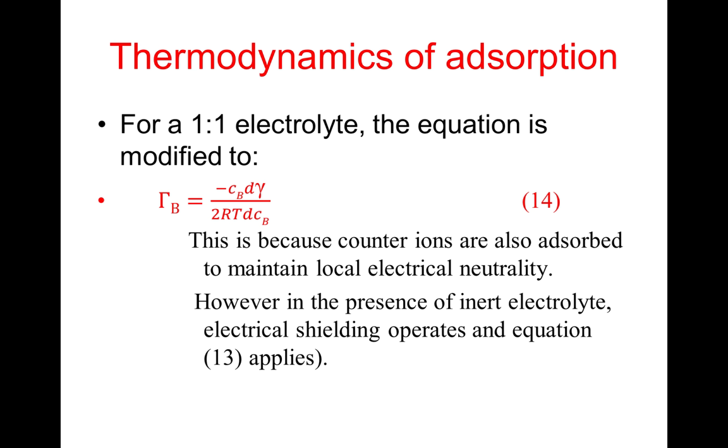For a one-to-one electrolyte, the equation is modified to Γ_B = -c_B × dγ/(2RT dc_B). Note the 2 at the bottom of the right-hand side. This is because counter ions are also adsorbed to maintain local electrical neutrality. However, in the presence of inert electrolyte, electrical shielding operates and equation 13 applies.